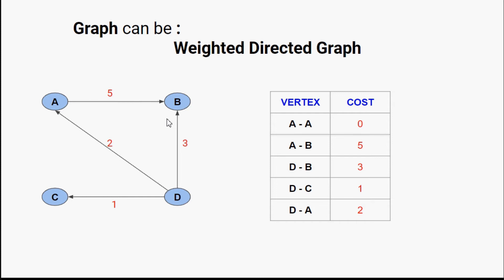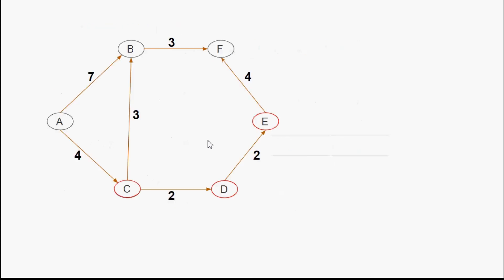We can also have a weighted undirected graph. In that case, if there is a path from A to B we also assume a path from B to A. So the cost from A to B is five and the cost from B to A is also five, because directions are not given. Next we are going to discuss how we can represent this directed graph in the form of a matrix.